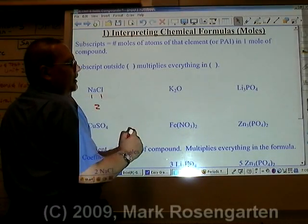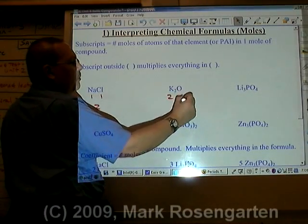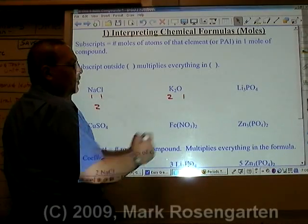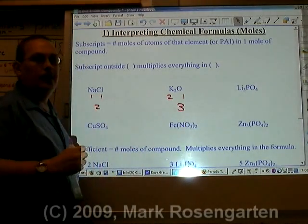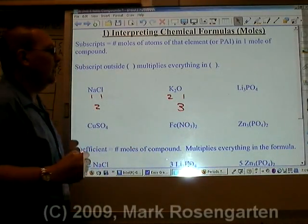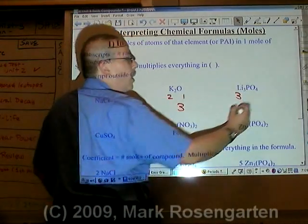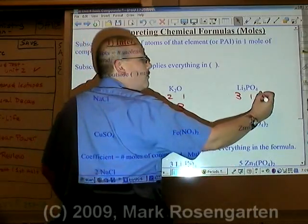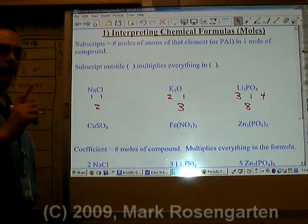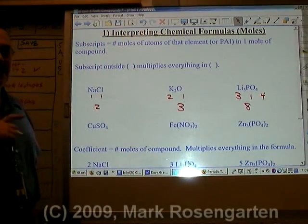One mole of potassium oxide has two moles of potassium and one mole of oxygen for a total of three moles worth of ions. In the compound lithium phosphate, there are three moles of lithium, one mole of phosphorus, and four moles of oxygen for a total of eight moles of atoms in this compound.